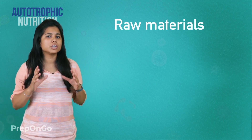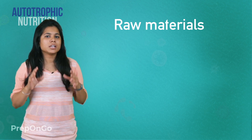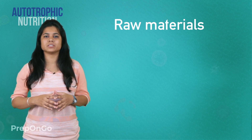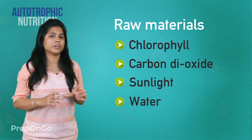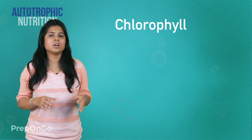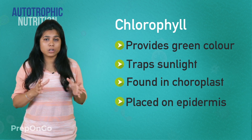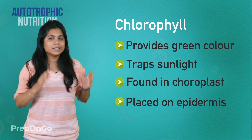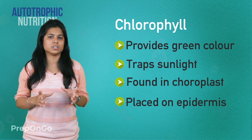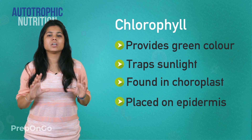Let's look at the raw materials used by plants in the photosynthesis process. There are four main raw materials: chlorophyll, carbon dioxide, sunlight, and water. Chlorophyll is responsible for the green color of plants and also plays an important role in trapping sunlight, which is essential for photosynthesis. Chlorophyll is contained in cell-like structures called chloroplasts, which are placed on the epidermis of the leaves.